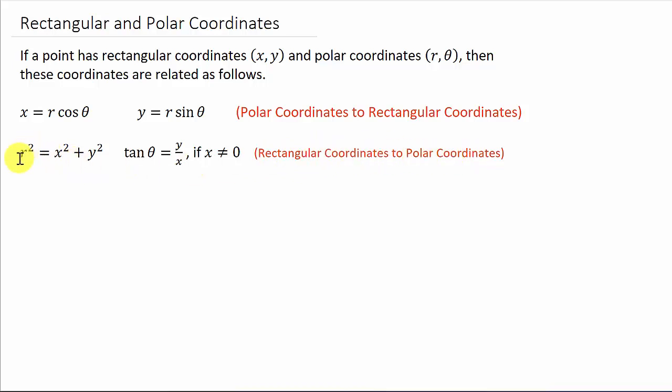So we'll use the fact that r squared is equal to x squared plus y squared, and tangent theta is equal to y over x. Alright, so that's what we're going to use. And just remember, r and theta, that's the polar coordinate. x and y, that's the rectangular coordinate.